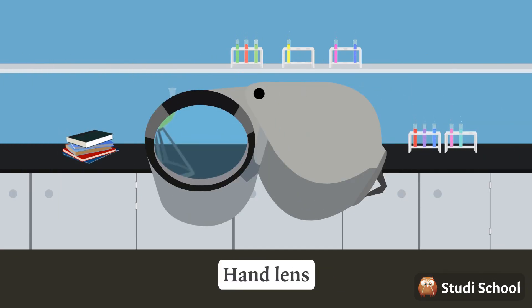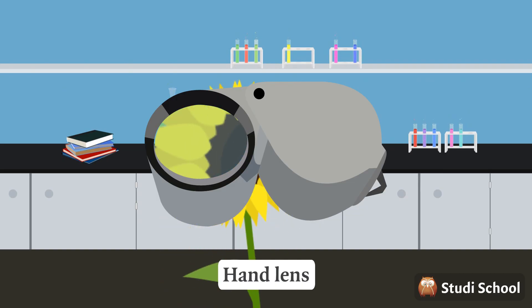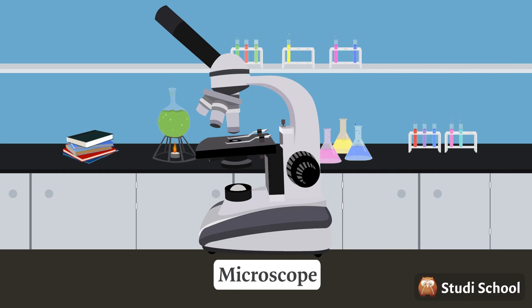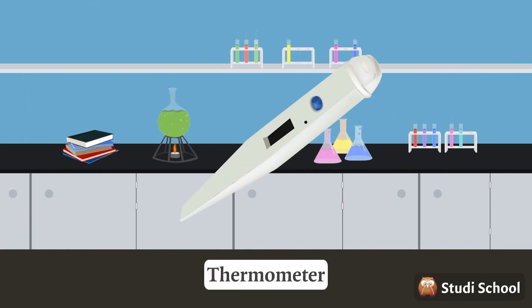This is a hand lens and can be used to magnify small objects and organisms. This is a microscope. It is used to look at specimens more closely. This is a thermometer and is used to measure temperature.